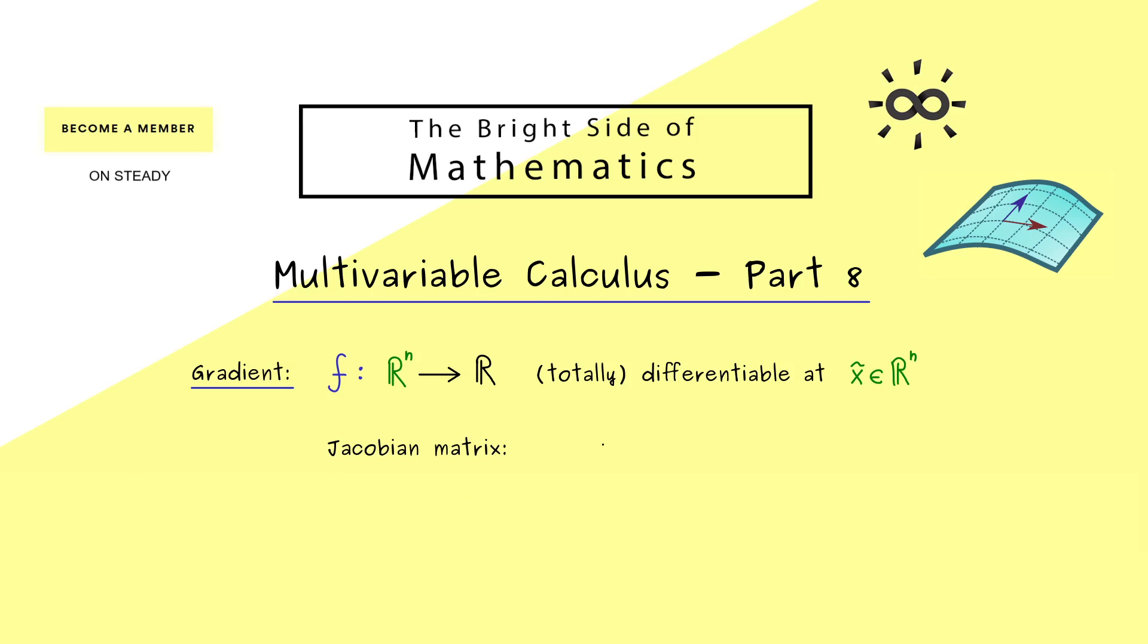The notation we have for the Jacobian matrix is capital J with index f, and the position, the point x̃ comes afterwards. Inside this matrix we find the partial derivatives. So the first entry is the partial derivative of f with respect to x₁ at the point x̃, then in the second column we find the partial derivative of f with respect to x₂, and this continues until we have the last entry given by the partial derivative of f with respect to xₙ.